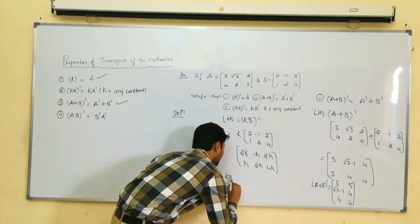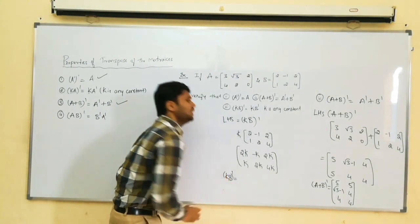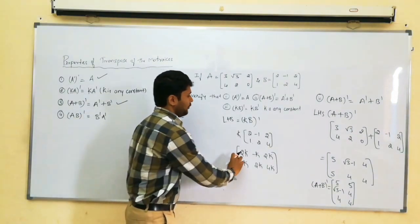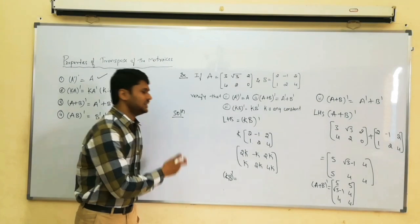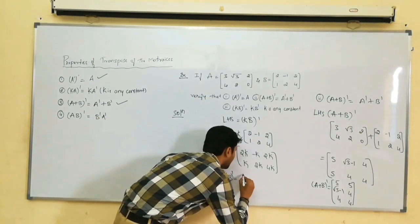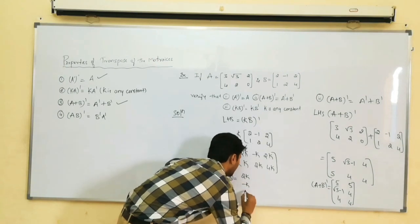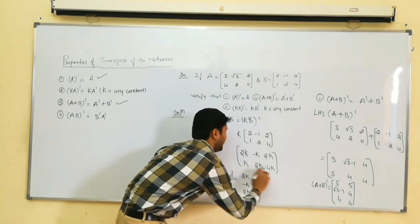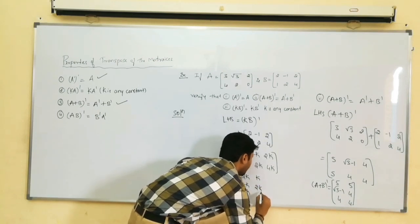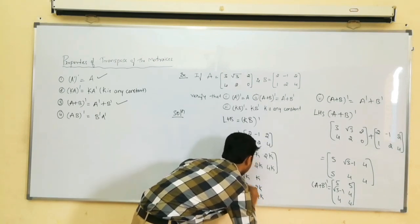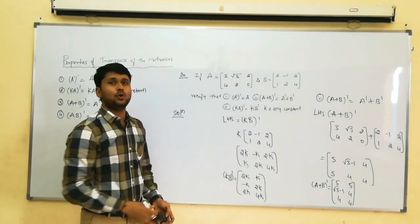K into B whole dash: taking the transpose by writing first row as first column and second row as second column gives: first column 2K, K; second column minus K, 2K; third column 2K, 4K. This is K into B whole dash.